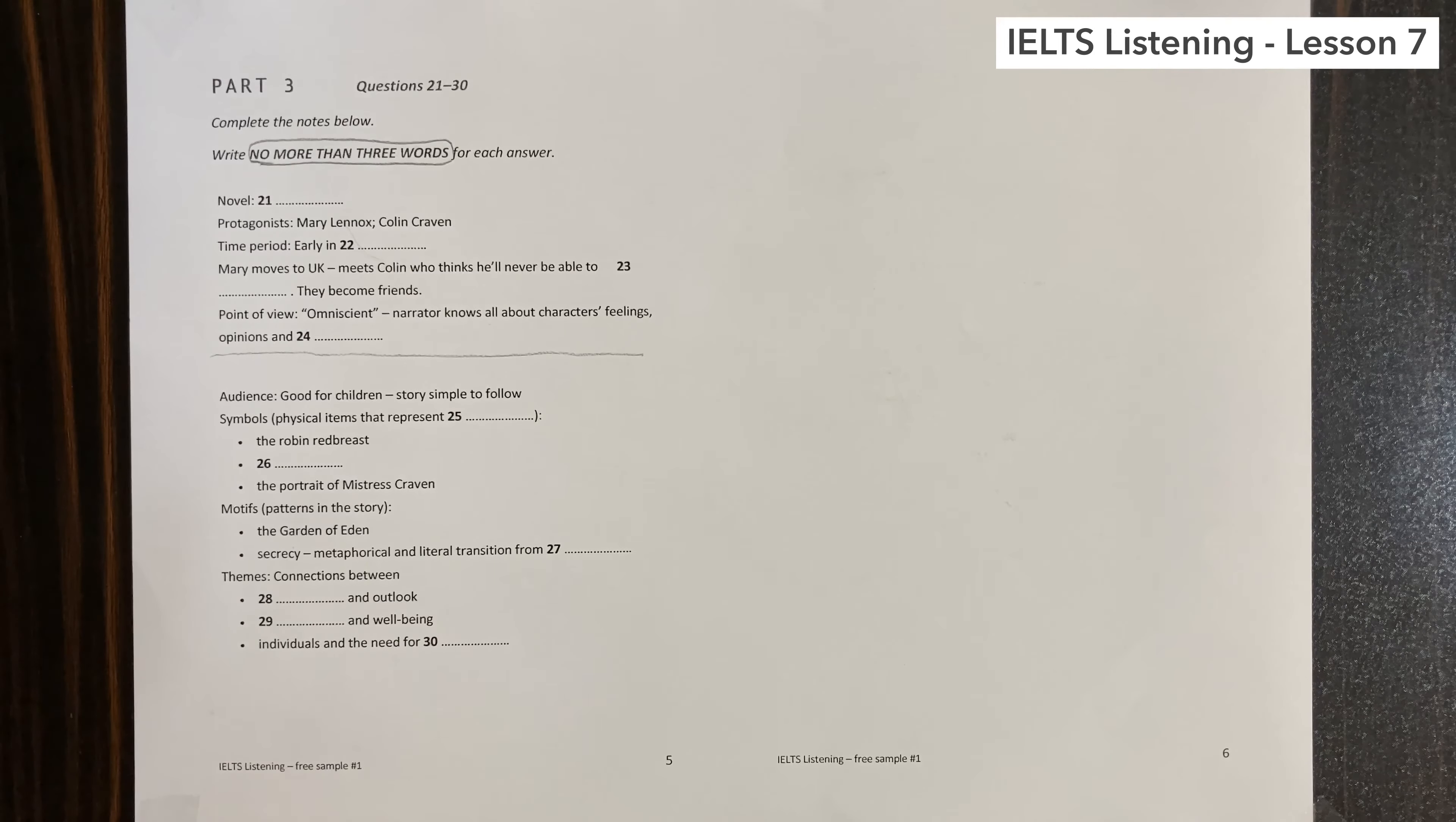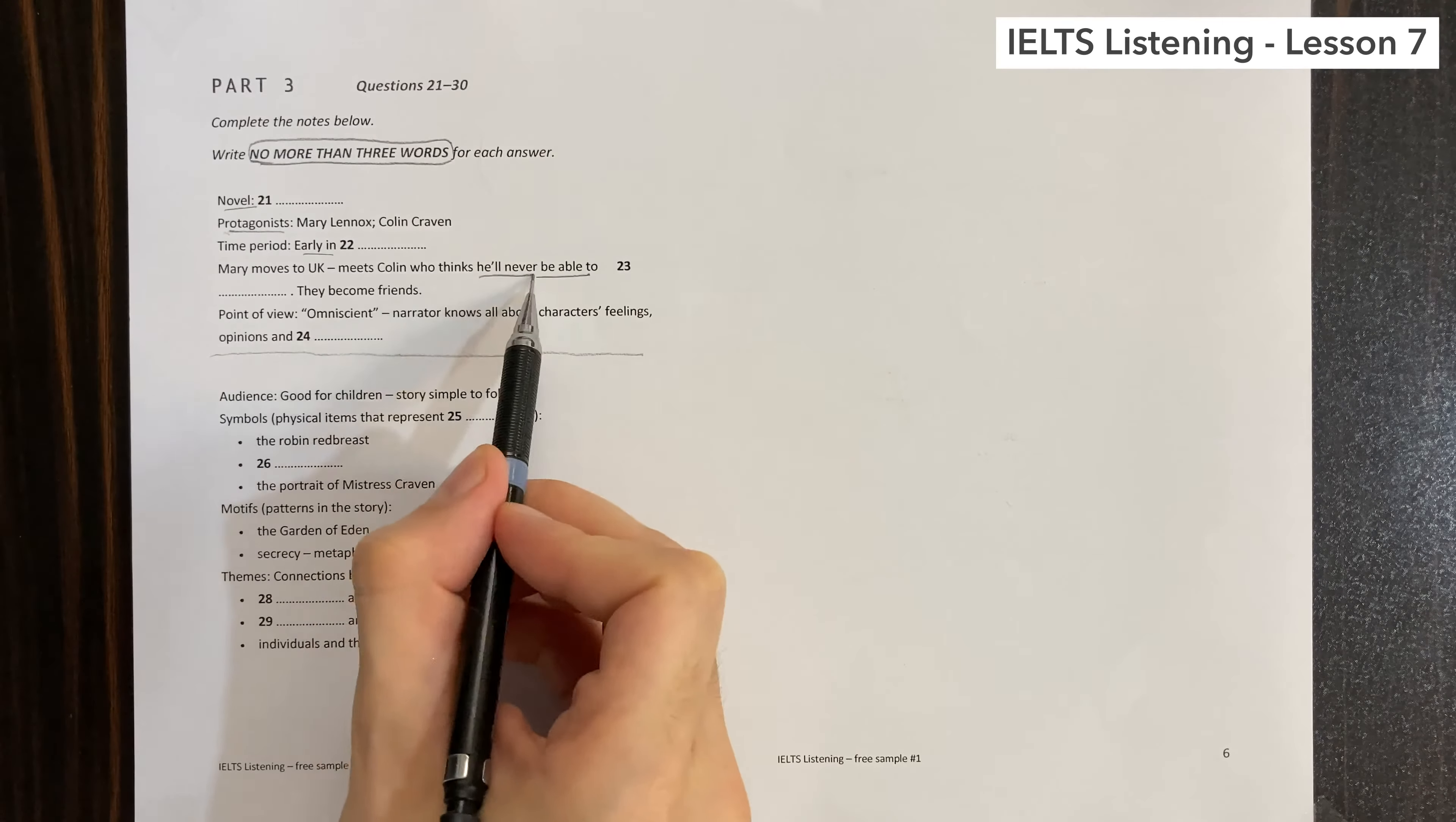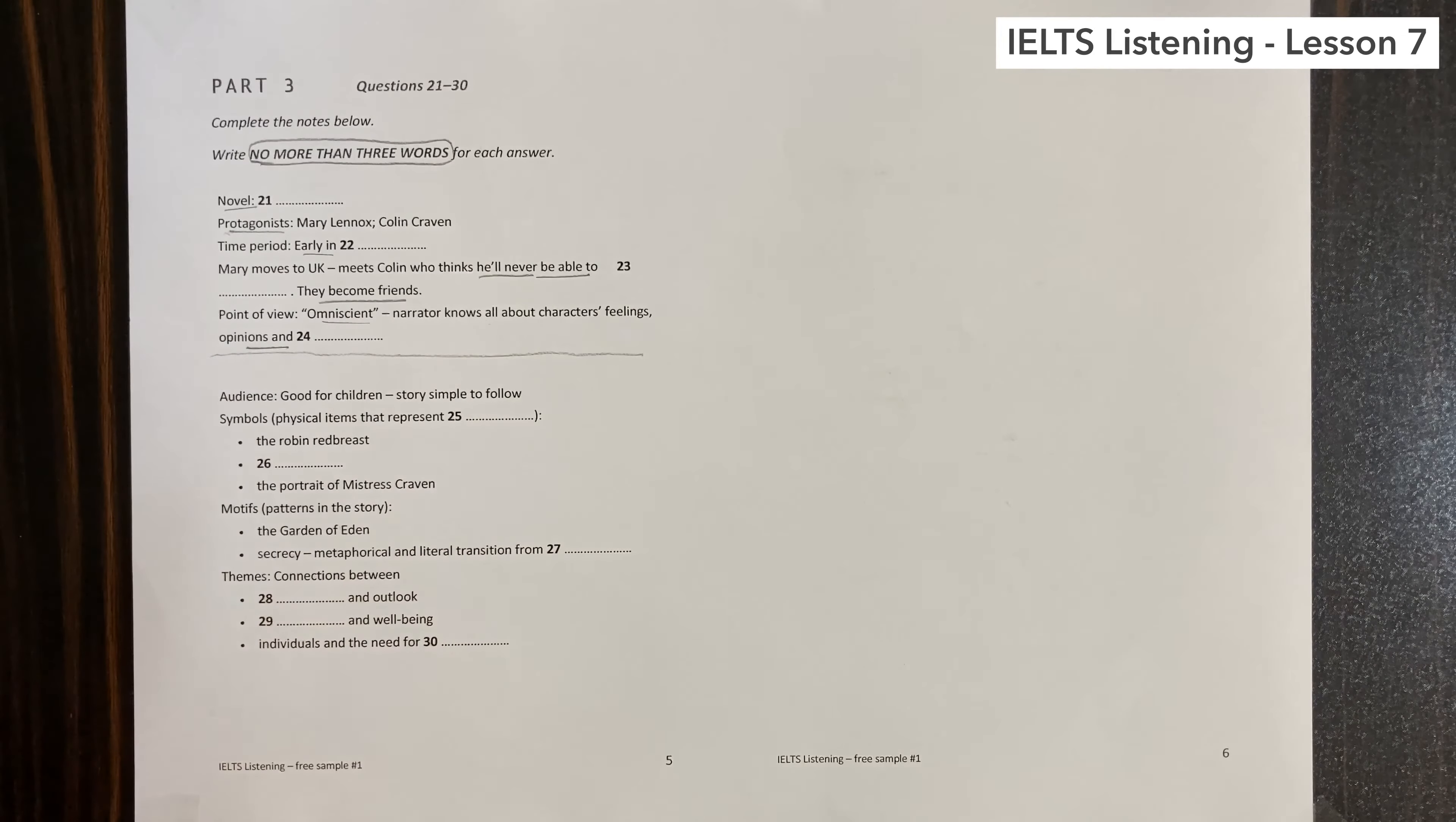Section three, you will hear a conversation between a tutor and two students who are preparing for an English literature test. First you have some time to look at questions 21 to 24. Okay, the name of the novel, protagonist, the main character in the story, Mary Lena is coming in time period early in the romantic era maybe. Most okay Miss Carlin who thinks he will never be able to. They become friends. Listen carefully and I pause it, I give myself a little more time. This is practice because I don't want to compete with myself, I want to improve my score. Point of view omniscient, omniscient means all knowing or a narrator that knows everything about all the characters in the story. Feelings, opinions, and something, sensibilities maybe.